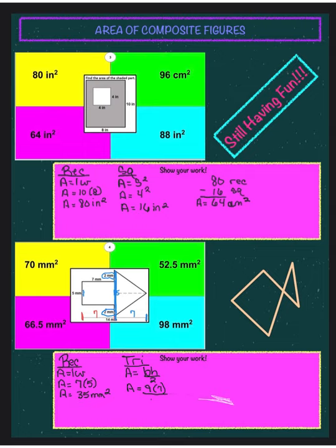I multiply the base of 9 by the height of 7, then divide by 2. So 9 times 7 is 63, and dividing by 2 gives 31.5 millimeters squared.